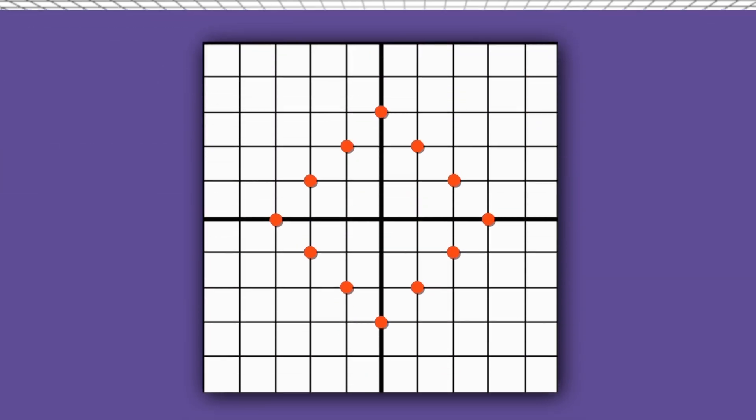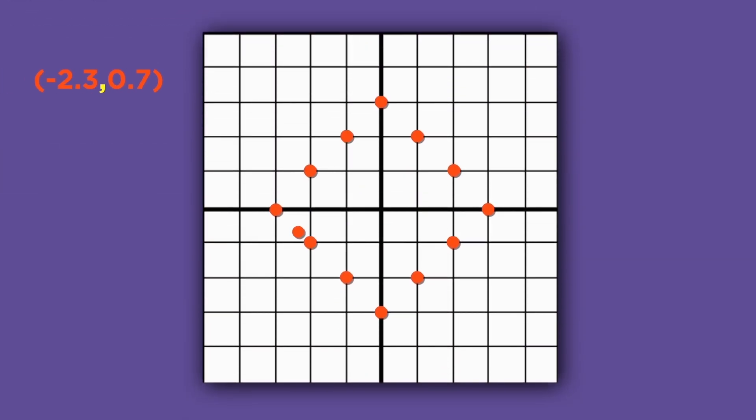In fact, now that we know we're allowed to drive through buildings and the only restriction is that we drive left, right, and up, down, not diagonally, we need to add a bunch of points, like (-2.3, 0.7), (1.5, -1.5), and (-1.4, 1.6). All these points are taxicab distance 3 from the origin and belong on our taxicab circle of radius 3.